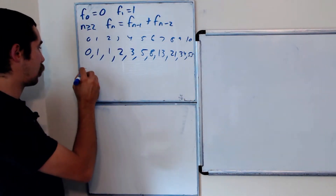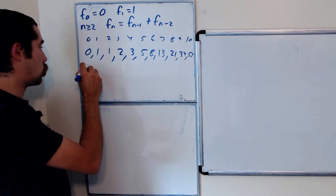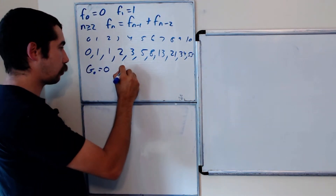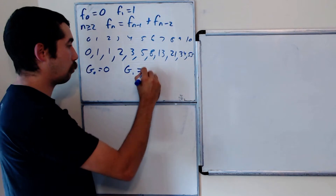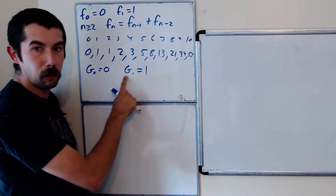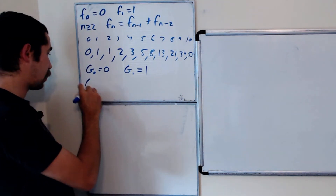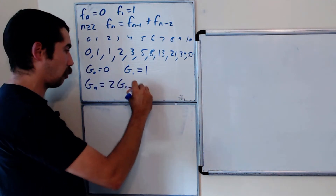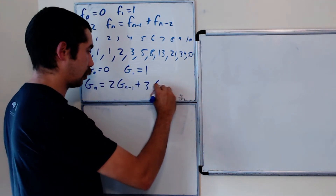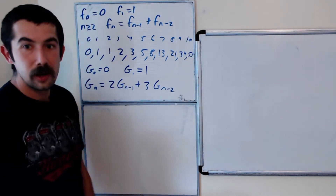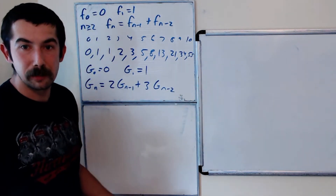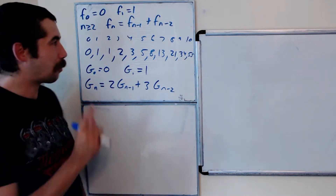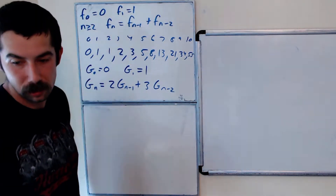Let's look at another sequence — I call this the G sequence. G0 is 0, G1 is 1, and Gn equals 2 times G(n-1) plus 3 times G(n-2). I'm going to write out the first 10 terms in this G sequence and see if the same property holds.